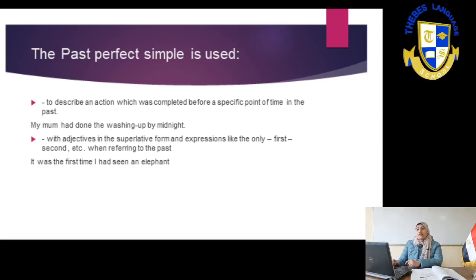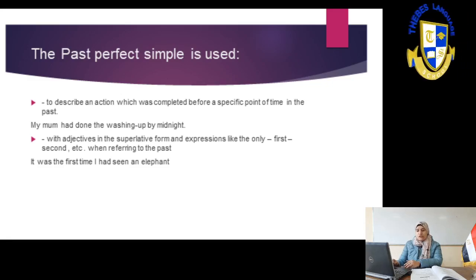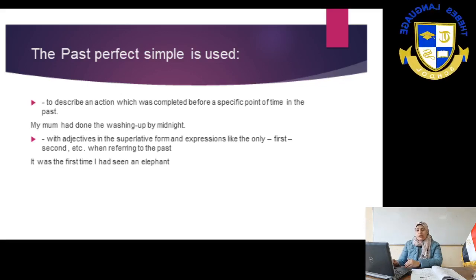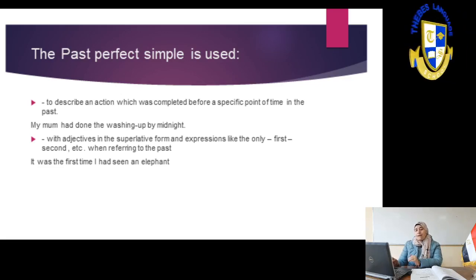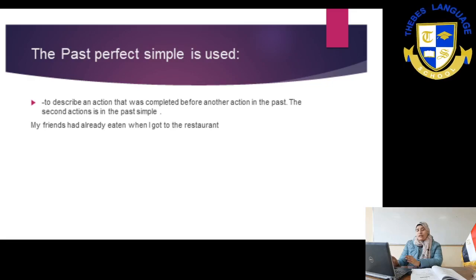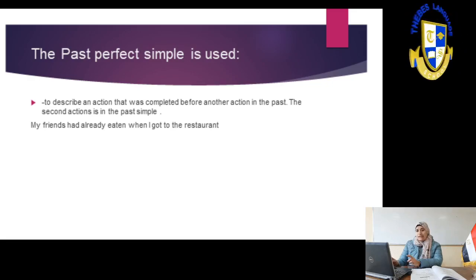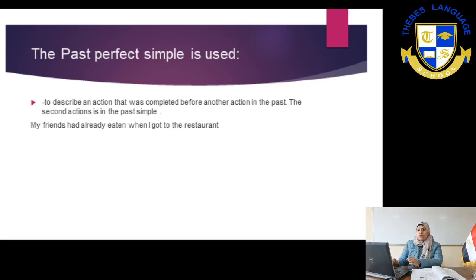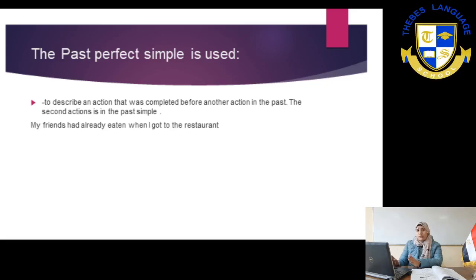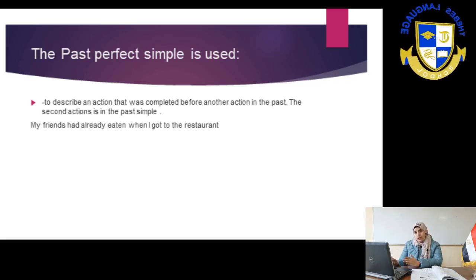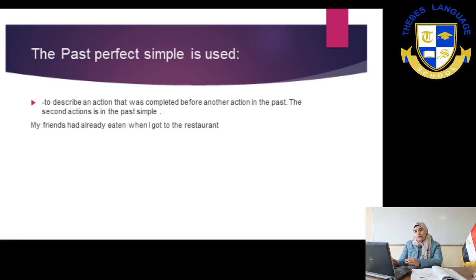Number two: with adjectives in the superlative form and expressions like 'the only,' 'first,' 'second,' etc., when referring to the past. For example: It was the first time I had seen an elephant. It was the first time I had played tennis. But take care — if we have 'it is the first time' at the beginning, we are going to use the present perfect. So if the first part is past, we continue in the past tenses.